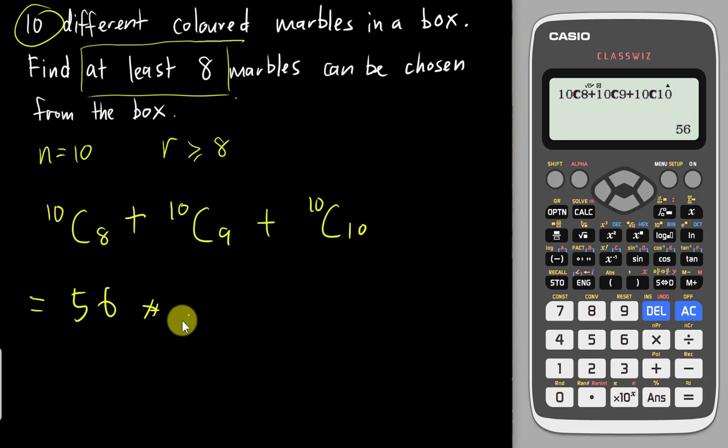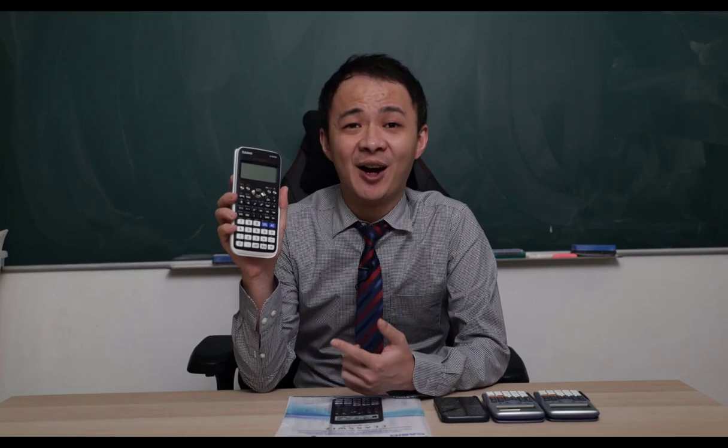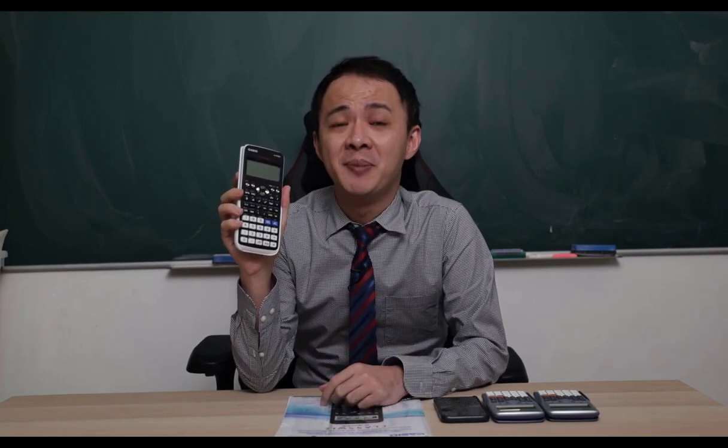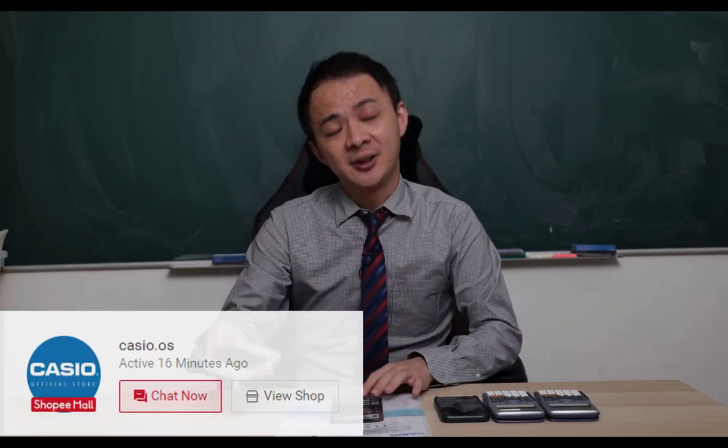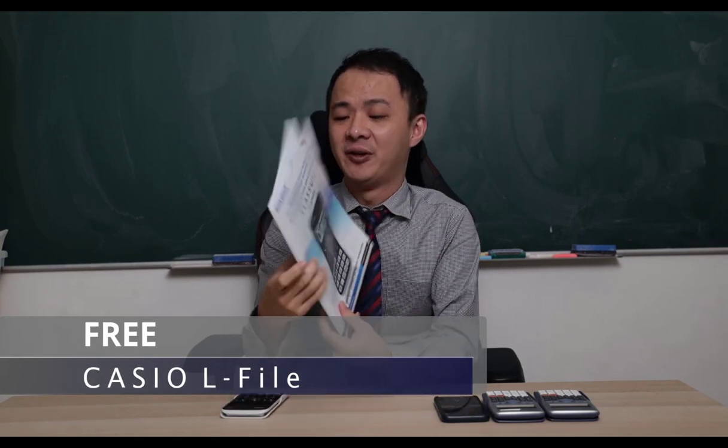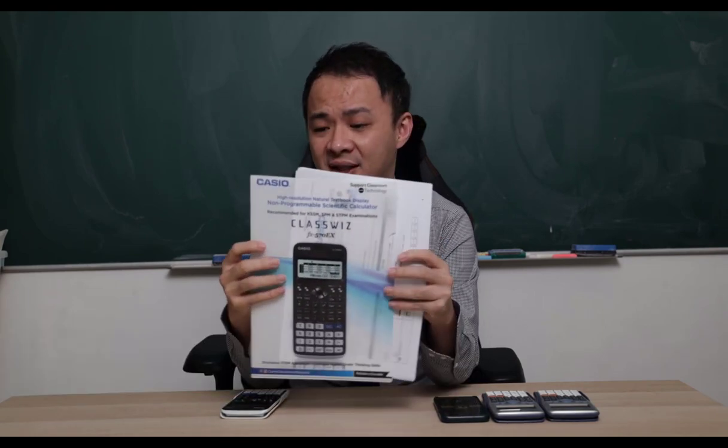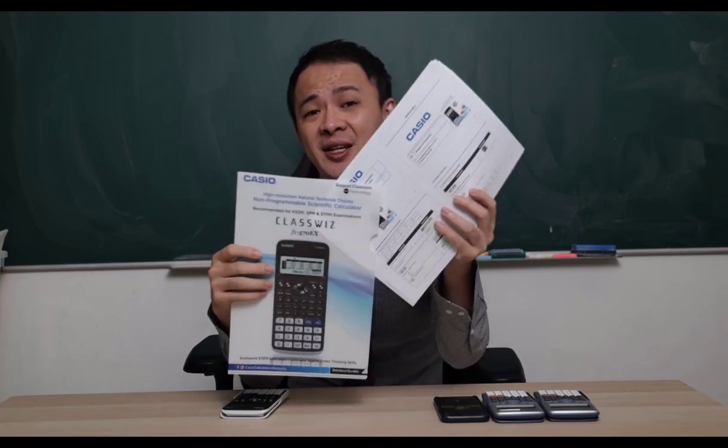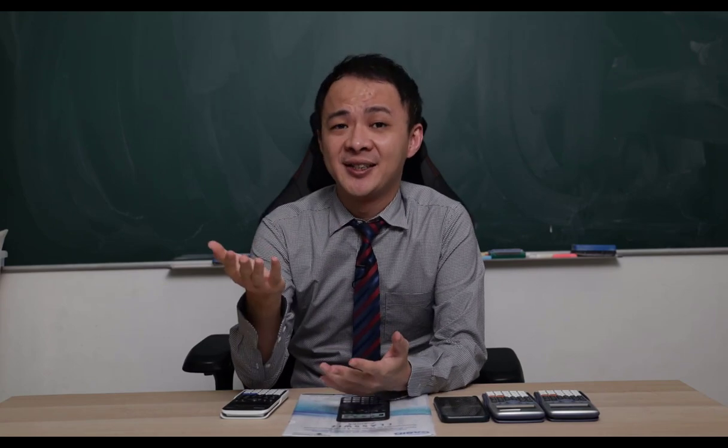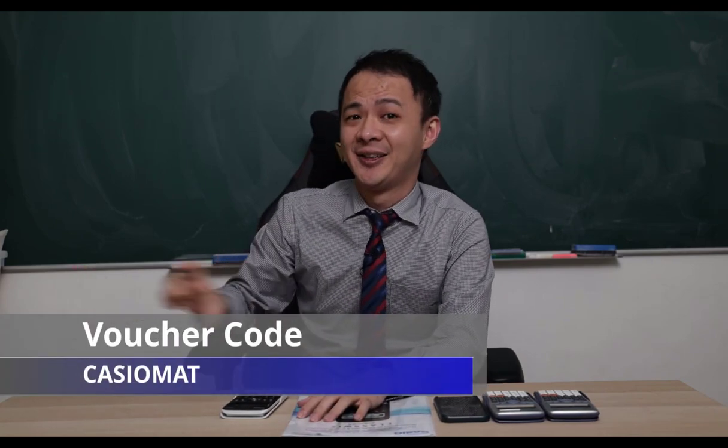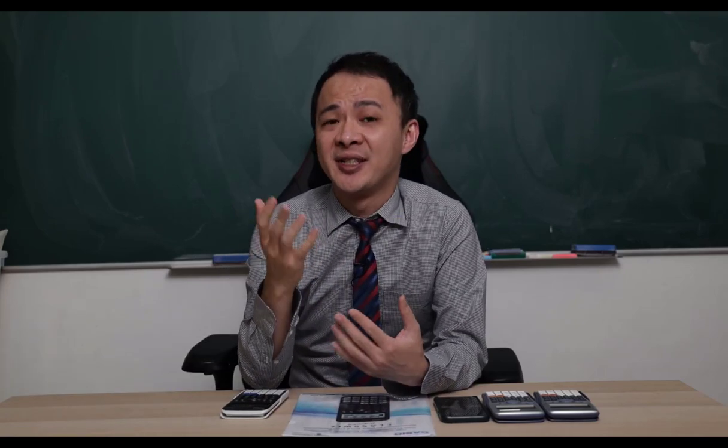I hope you find this video helpful. If you are interested to get this calculator, I will share a shopping link in the description below. The link will bring you to the Casio official store. Right now Casio Malaysia is doing some promotion. Whoever wants to get this calculator from their official store will get a free Casio L file. It's a plastic file which you can easily insert some paper. Besides that, Casio Malaysia will also give you another 5 ringgit discount if you key in my voucher code.